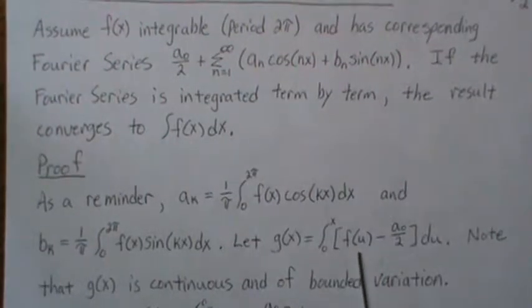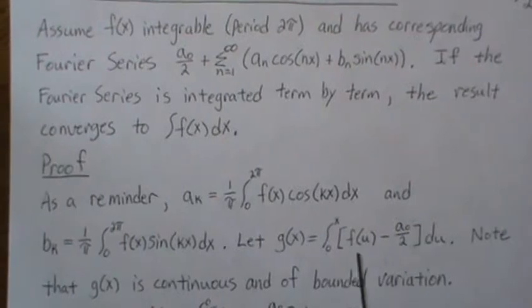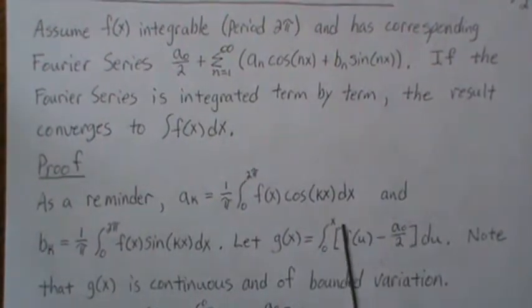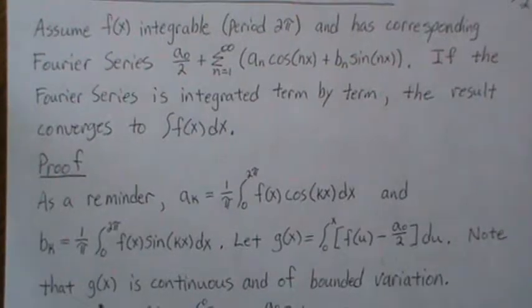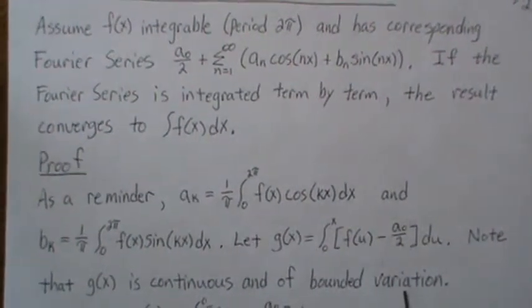And we're going to assume that you can look this up or you know it. Now since f is integrable and this is a constant, so this function is integrable. And then when you integrate from zero to x, you can show that g(x) is continuous and of bounded variation.